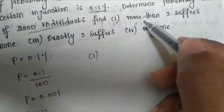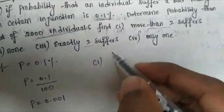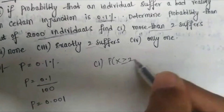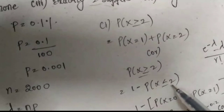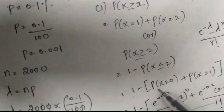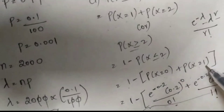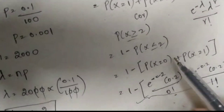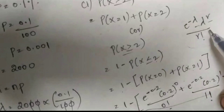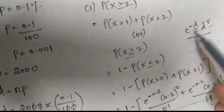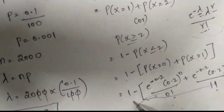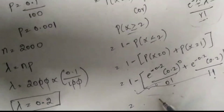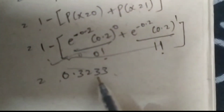First, finding P(X > 2), which equals 1 − P(X ≤ 2), that is 1 − [P(X=0) + P(X=1) + P(X=2)]. Using the formula e^(−λ) · λ^r / r! and substituting λ = 0.2 with r = 0, 1, 2, by calculating in the Casio calculator we get the answer 0.3233.